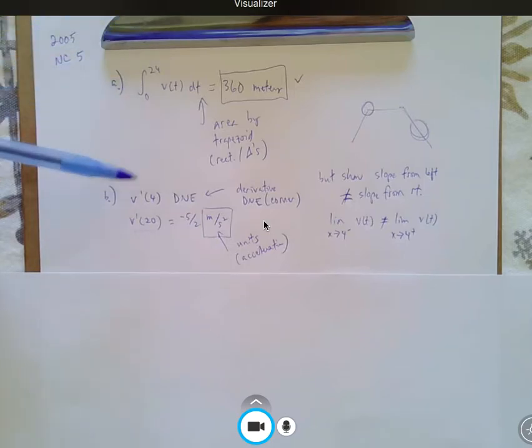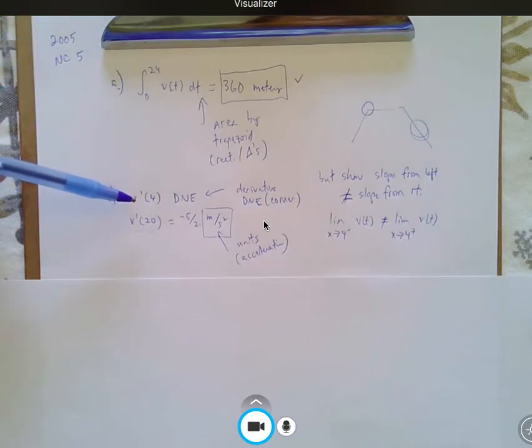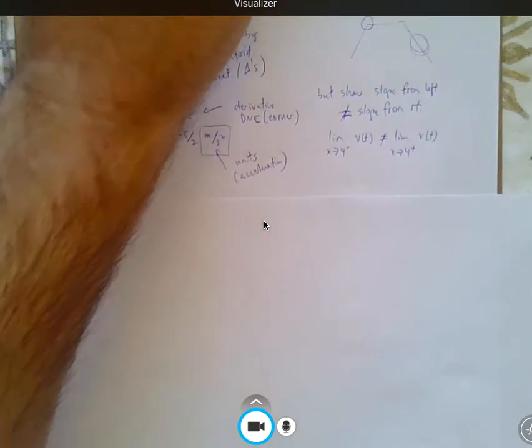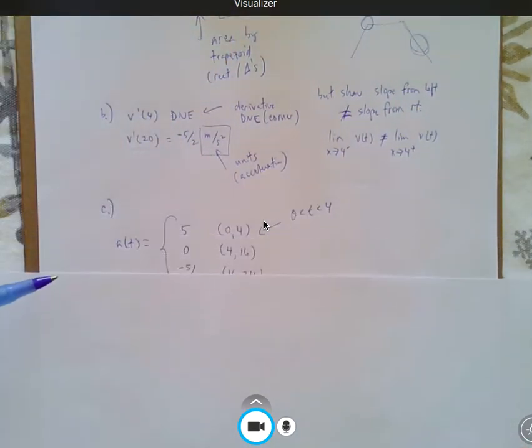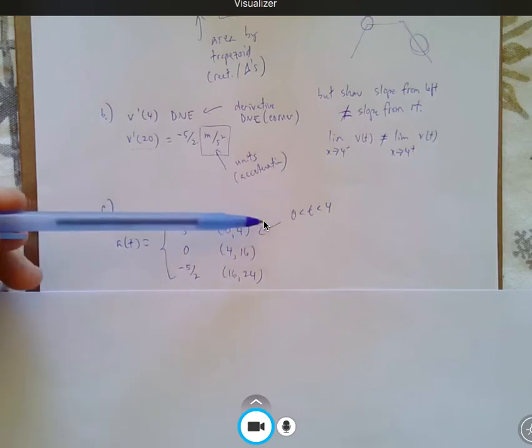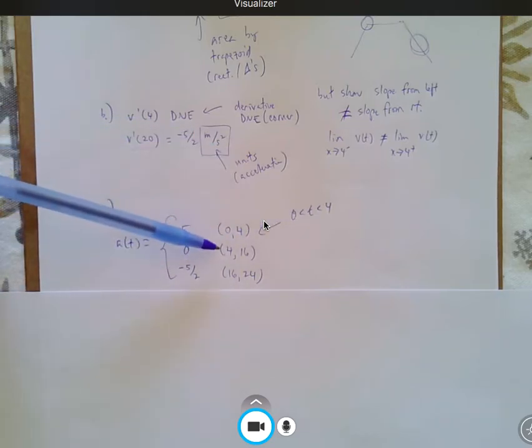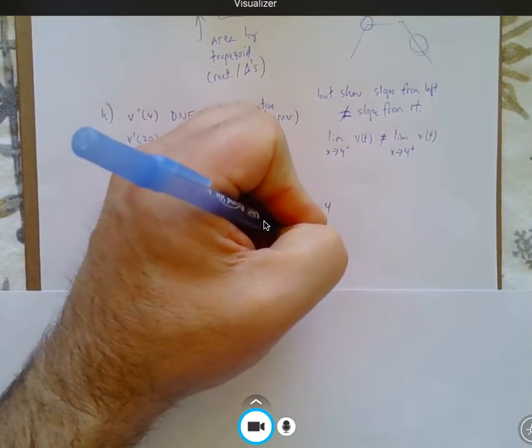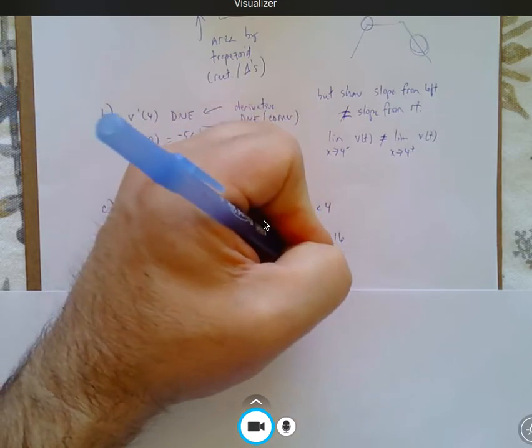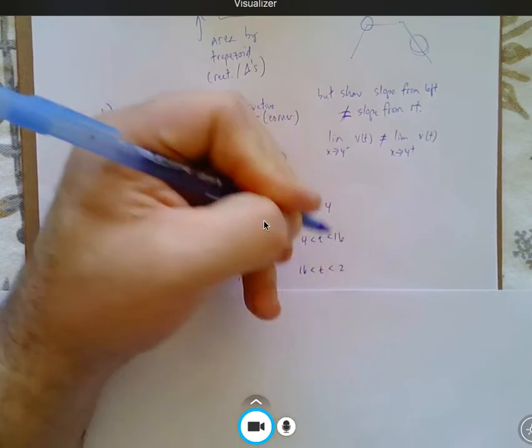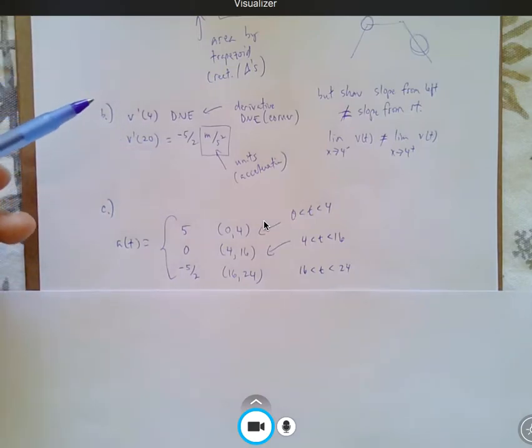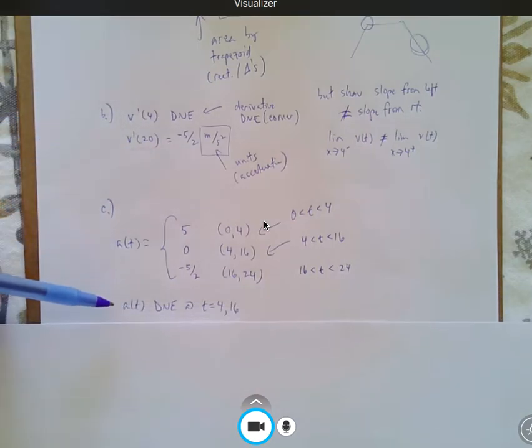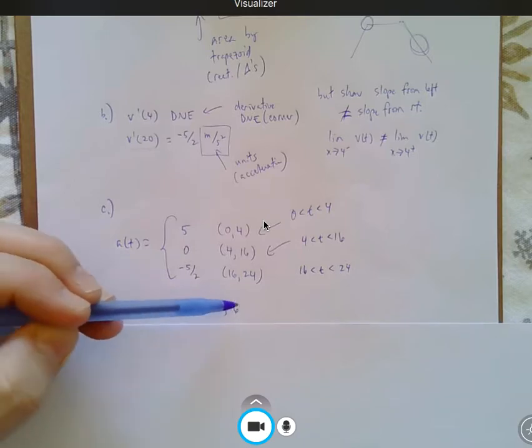So again, I felt that that question was pretty standard. Question C, they want you to make a piecewise function for the acceleration graph. And that's not so bad because basically the slope of the line segment from time 0 to time 4, however you want to write it, is 5. And the slope from time 4 to 16 is 0, and the slope from time 16 to time 24 is negative 5 halves. I would probably suggest you writing this as your time interval, just to clarify that you know what you're talking about to the AP grader, so keep that in mind. And emphasize that the derivative doesn't exist, the acceleration doesn't exist at those times where the graph meets at a corner.